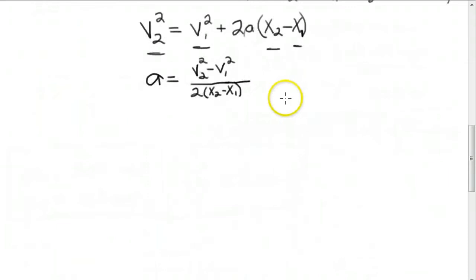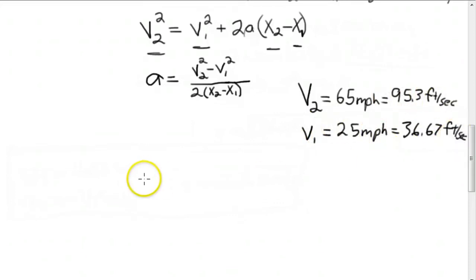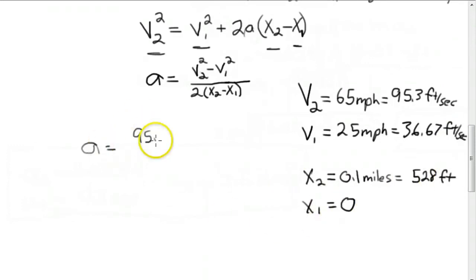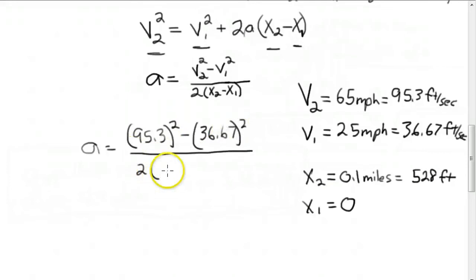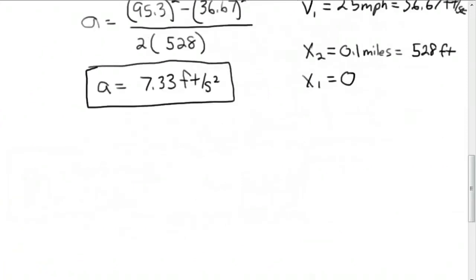Now we need to work in consistent units. Usually the acceleration is given in feet per second squared, and we have the velocities in miles per hour, so let's convert those. And there's the solution to part A: it's 7.333 feet per second squared.